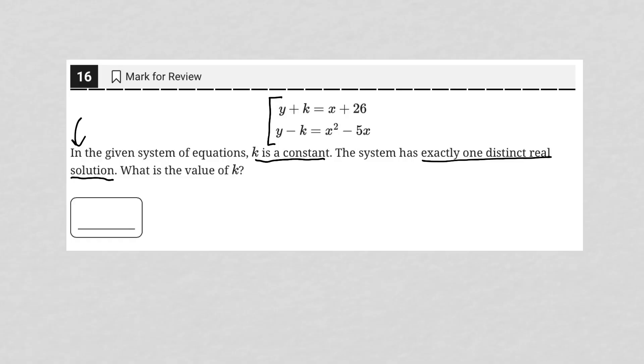So first of all, whenever we see the wording exactly one distinct real solution, what that means is that our determinant, b squared minus 4ac, is equal to 0. That is the translation of that statement. So whenever you see that on a question, one distinct real solution, be sure to use b squared minus 4ac equals 0.